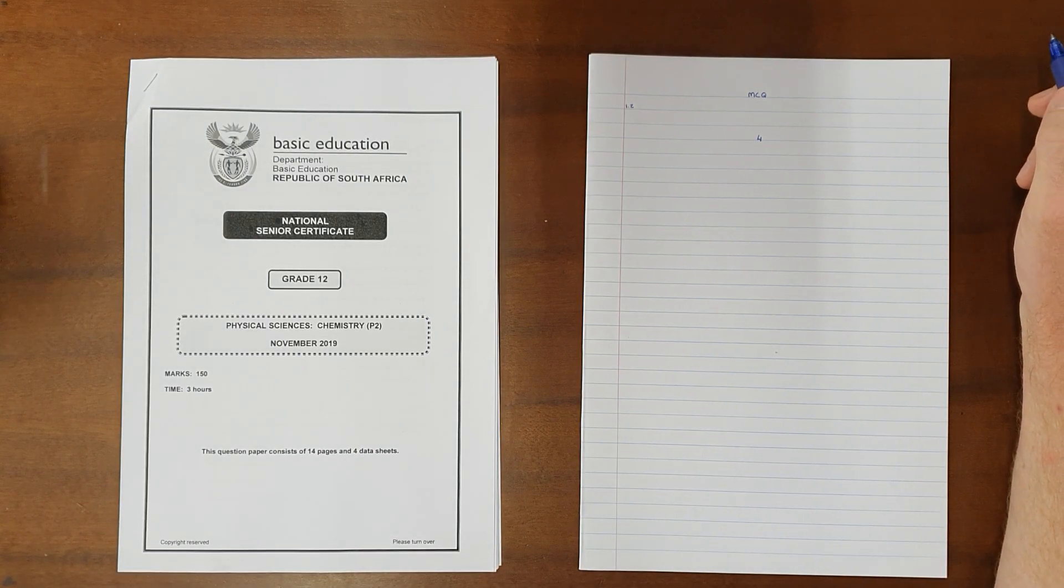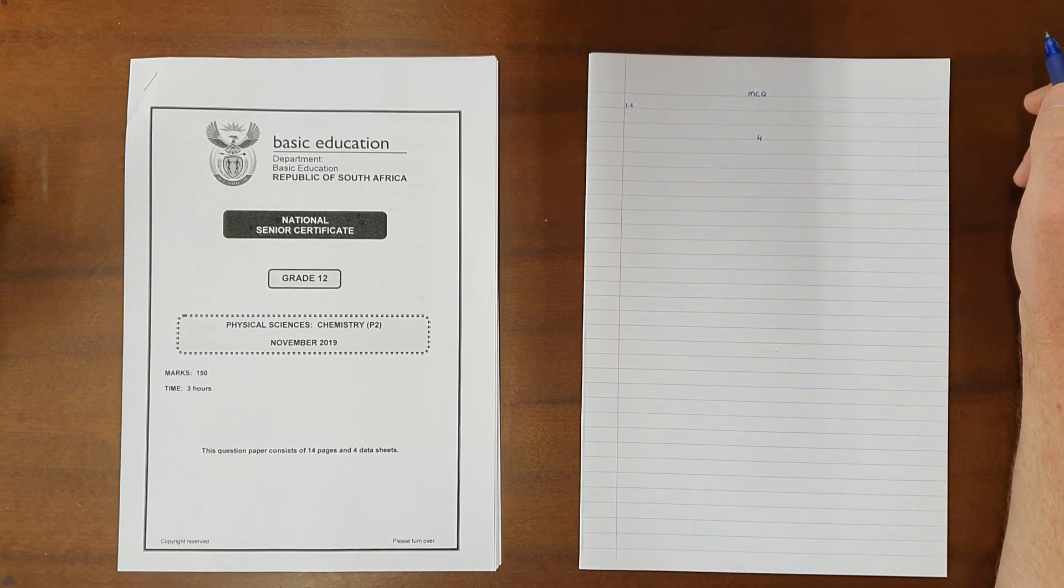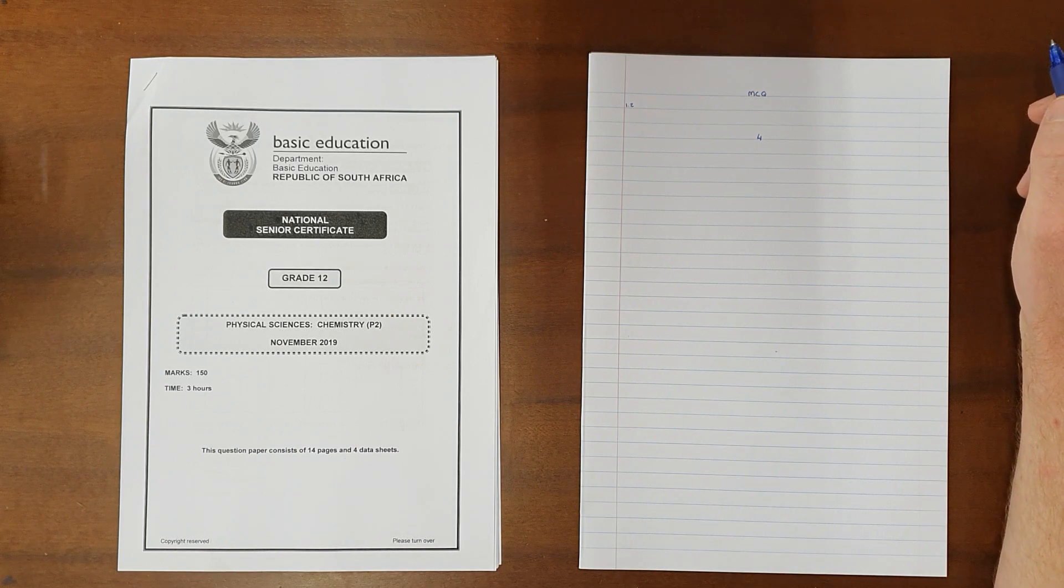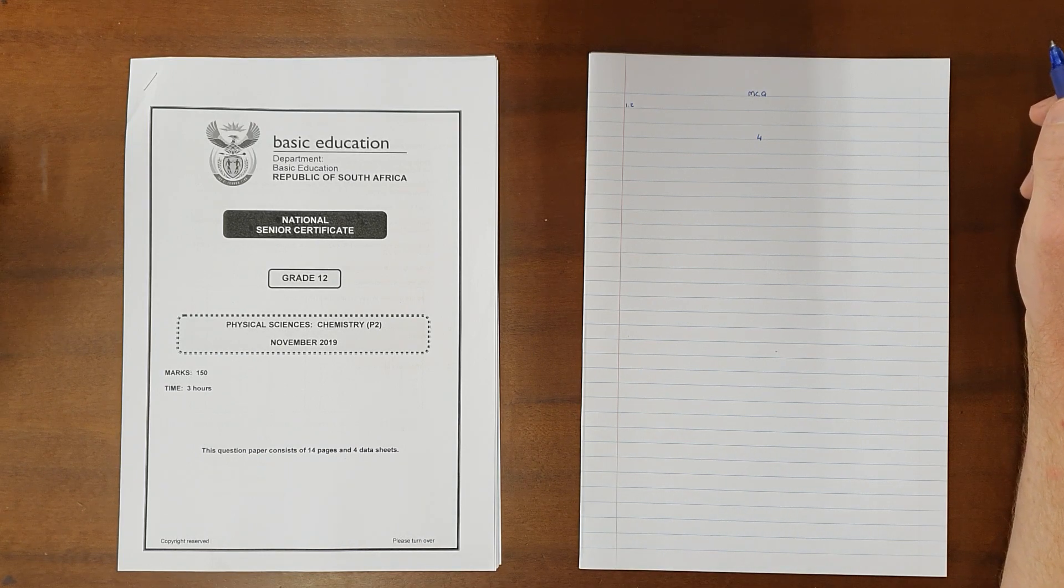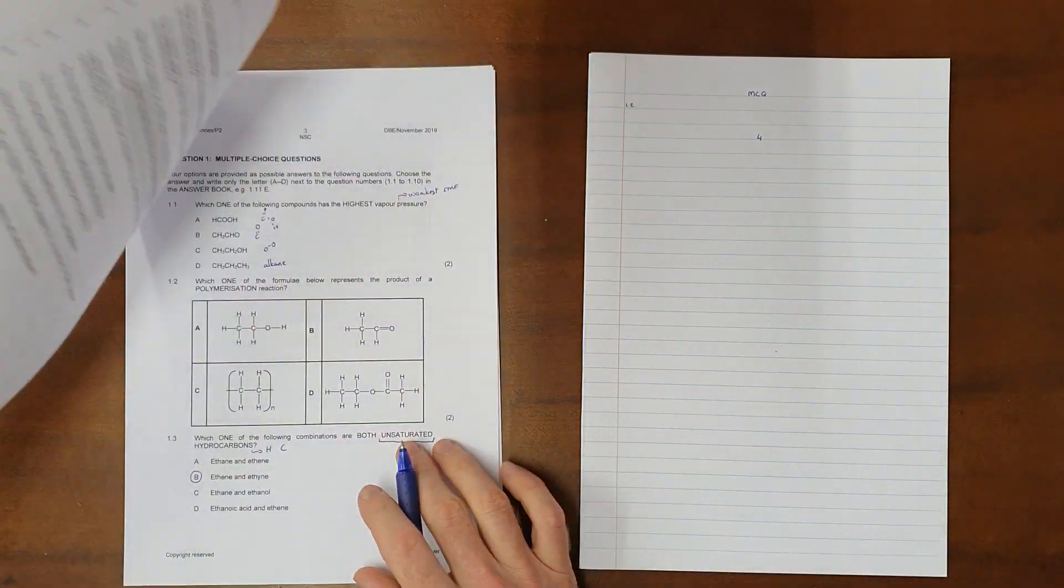I am working through the organic reactions section of organic chemistry in the 2019 chemistry paper. This section focuses on the reactions that happen between organic molecules.